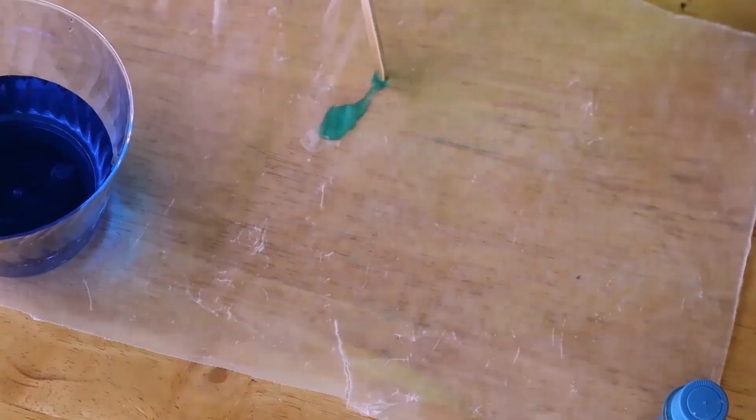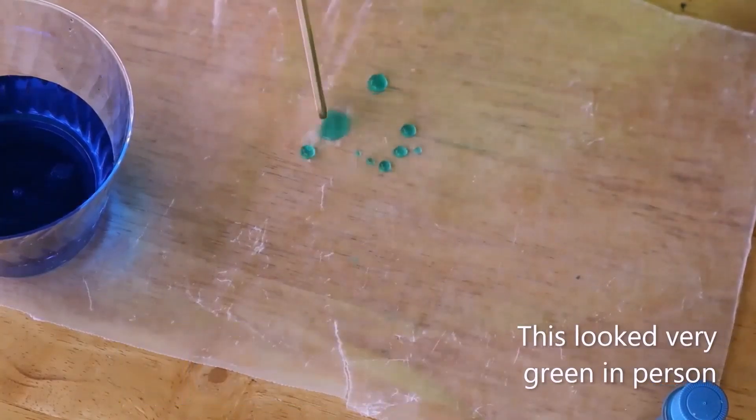The children can then experiment with their large water droplet and try to separate it back into the yellow and blue colors.